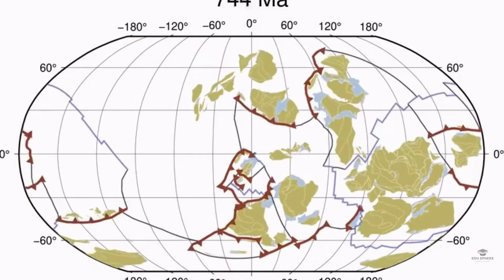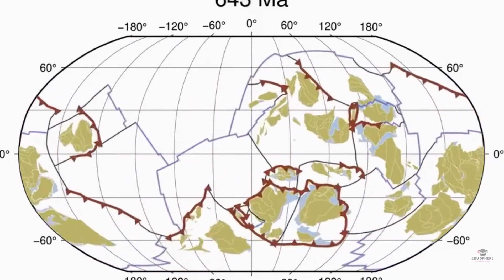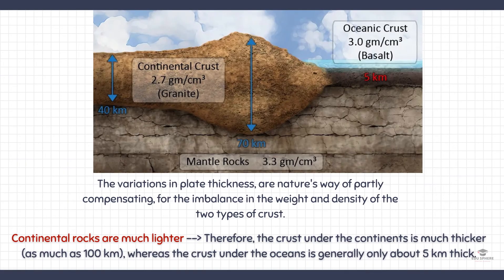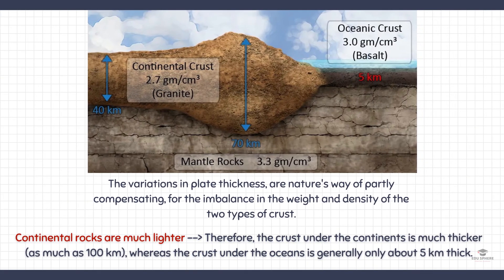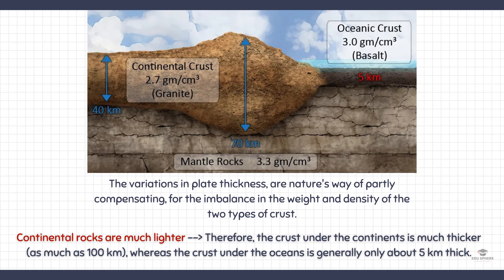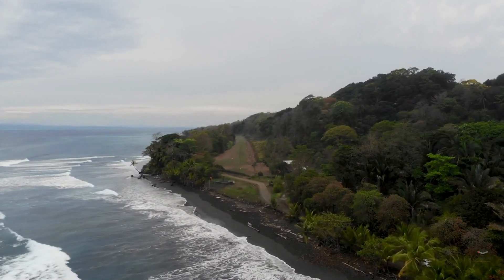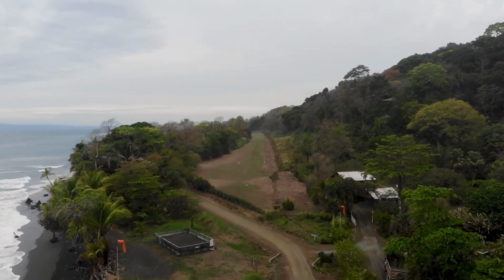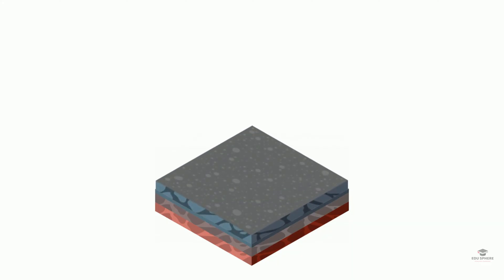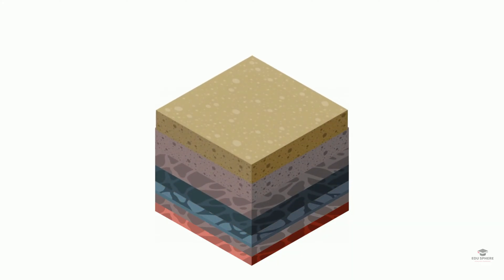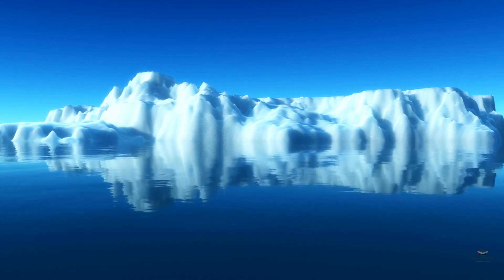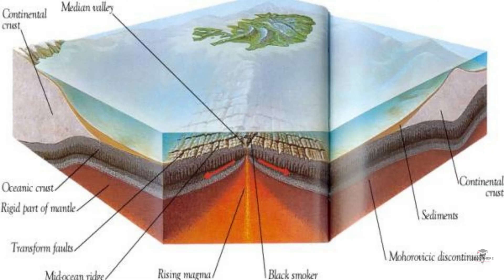How do these massive slabs of solid rock float despite their tremendous weight? The answer lies in the composition of the rocks. The continental crust is composed of granitic rocks, which are made up of relatively lightweight minerals such as quartz and feldspar. By contrast, the oceanic crust is composed of basaltic rocks, which are much denser and heavier. The variations in plate thickness are nature's way of partly compensating for the imbalance in weight and density of the two types of crust. Because continental rocks are much lighter, the crust under the continents is much thicker, whereas the crust under the oceans is generally only about 5 km thick. Like icebergs, only the tips of which are visible above water, continents have deep roots to support their elevations.